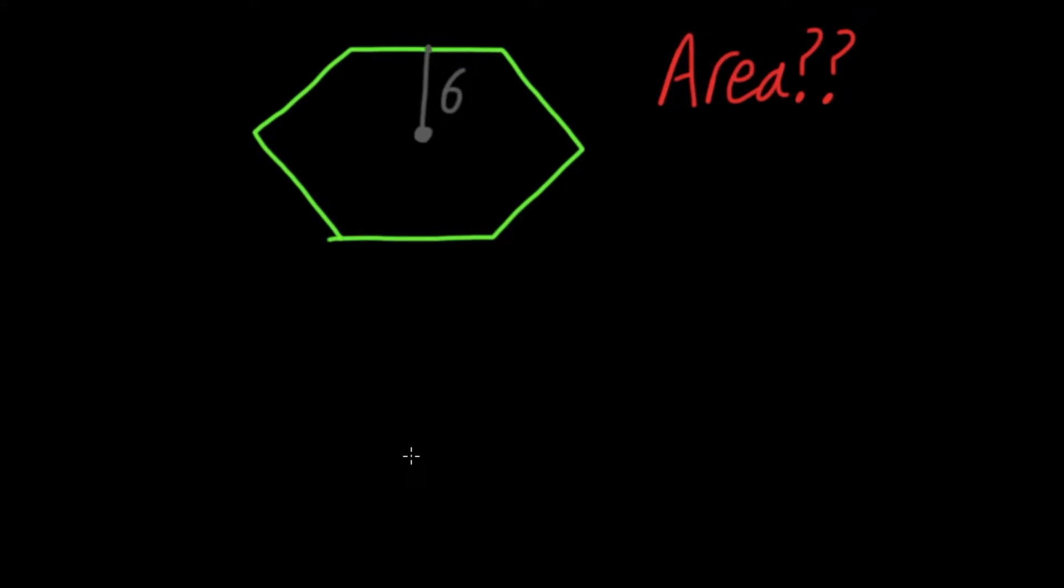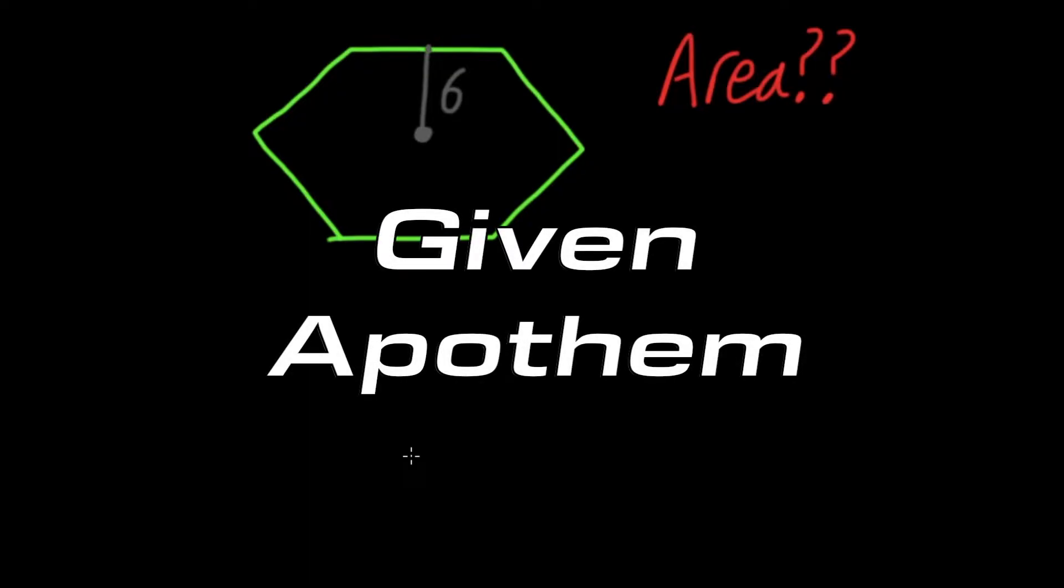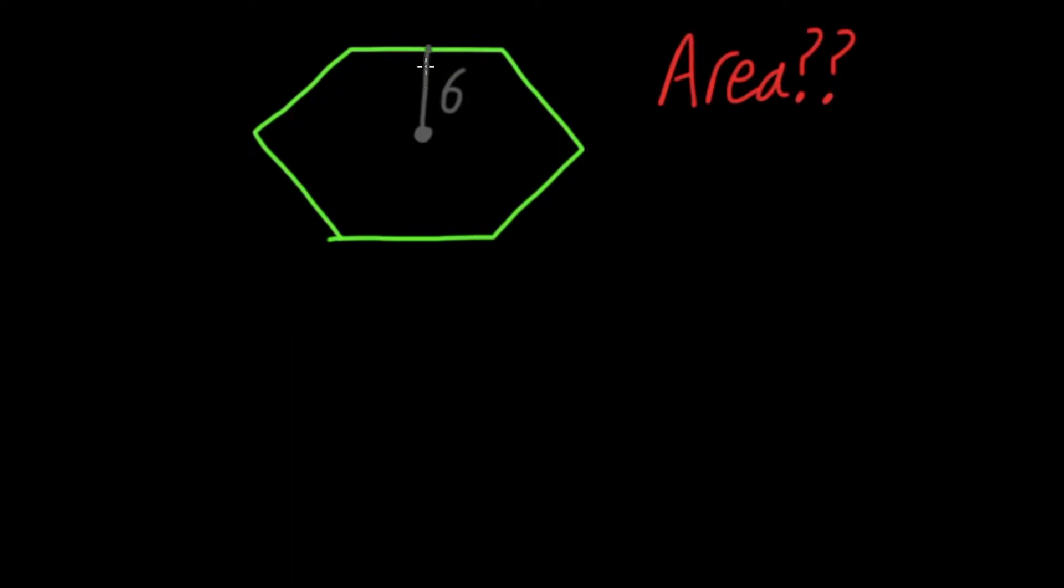Hello and welcome. In this video, I'm going to show you how to find the area of a hexagon if we are only given the apothem. Here we have only been given the apothem, which is the distance from the side of the hexagon to the center, and that is 6.